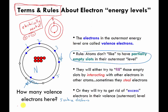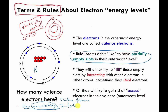That's a different question than how many electrons there are total. If I don't use the word 'valence' and just say 'how many electrons,' we have to count all of them including those in the first energy level. The answer is seven total electrons, but only five of them are in the outermost energy level.